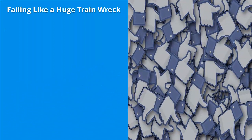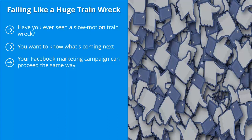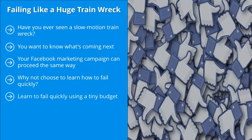Mistake ten: failing like a huge train wreck. Have you ever seen a slow-motion train wreck? It's quite sad because it's all too predictable, but you can't look the other way. Your Facebook marketing campaign can proceed the same way — you know the campaign is failing, but you can't quite put your finger on the cause, so you just go through the motions like a deer caught in headlights. Instead, choose to learn how to fail quickly. Since you're not going to make 100% of your shots, learn to live with that fact and move on. Learn to fail quickly using a tiny budget, so you can run many different experiments. Even though the vast majority are failures, that's okay — you only spend a small amount of money figuring out winning ads.